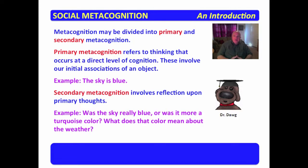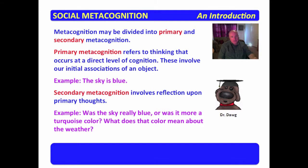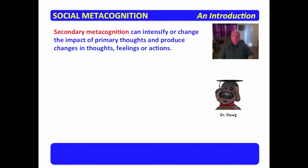An example might be: was the sky really blue or was it a turquoise color? What does that color mean about the weather? So primary is the initial association and secondary is reflection about the initial association. Metacognition involves both primary and secondary aspects.